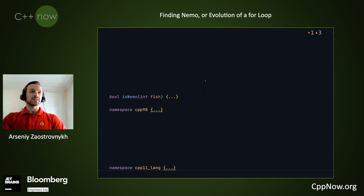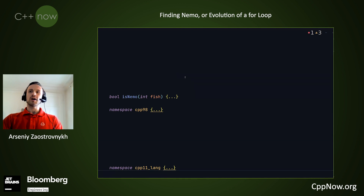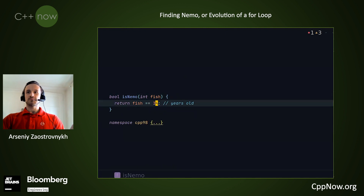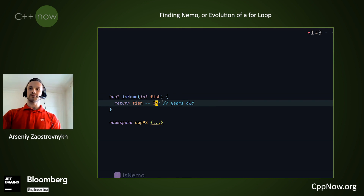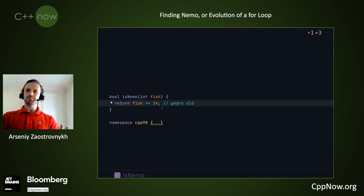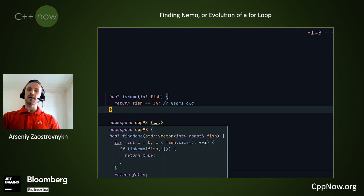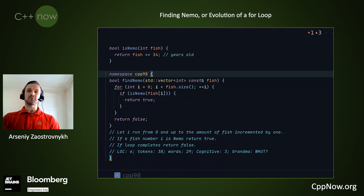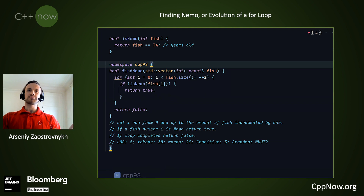Let's start 20 years ago. In 2003, when the movie came out, Nemo was six years old. So how could we find Nemo in the age of C++98? First of all, how do we detect a Nemo? Simple — for the fish, reduced to just one integer. If it's 34, which is approximately Nemo's age now, this is the Nemo. Suppose we have a bucket of fish and we want to see if Nemo is there. This is just a linear search algorithm — pretty simple.